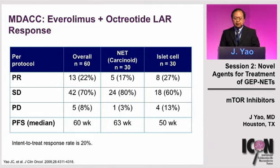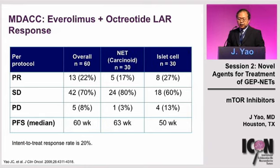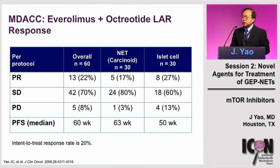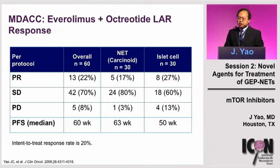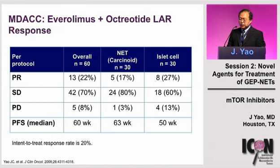This led us to conduct a phase 2 study opened in 2005, where we treated patients with everolimus plus octreotide LAR. We treated a total of 60 patients — 30 carcinoid tumors and 30 islet cell tumors. Among these patients who were relatively early in their disease course, there was an intent-to-treat response rate of 20%, which is fairly promising in a group of patients with disease refractory to standard therapy.